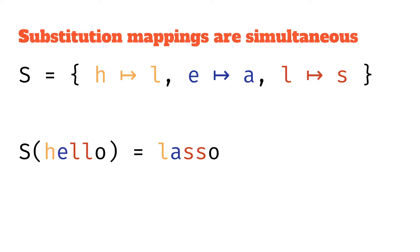In a way, you can almost think of it as being like repeatedly applied. That's not how substitutions work. If it was, we'd get sasso.